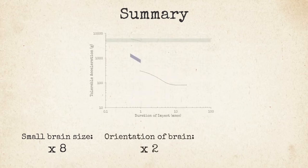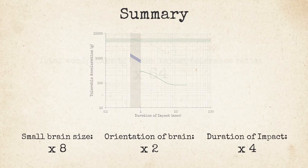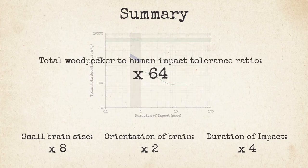And one is the duration of the impact, and that gives a factor of 4. So that altogether there's a factor of 64. The woodpecker brain should be able to withstand decelerations about 64 times that that a human brain can tolerate without injury.